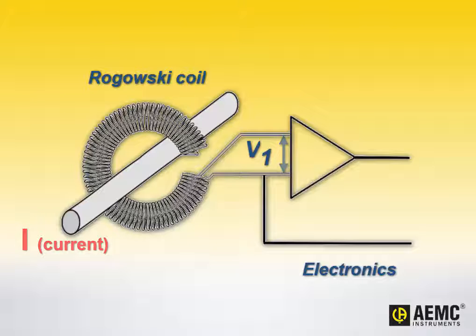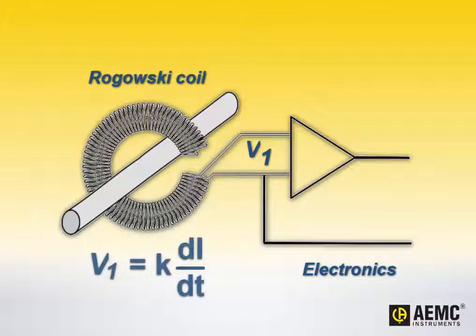Calculating current from V1 requires the formula shown on the screen. In this formula, K is a value derived from the physical characteristics of the coil. These include loop size, the number of turns, and the length of the winding. Di over dt represents the change in current over time, which is dependent on the current's frequency.